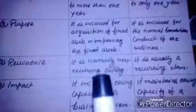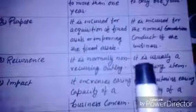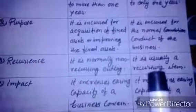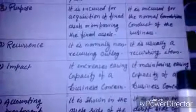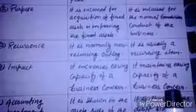Third, on the basis of recurrence: capital expenditure is normally non-recurring, whereas revenue expenditure is usually a recurring item. Fourth, on the basis of impact: capital expenditure increases the earning capacity of a business concern, whereas revenue expenditure maintains the earning capacity of a business concern.